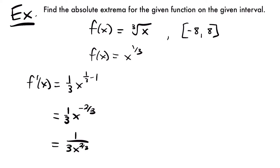Moving this to the denominator to make the exponent positive, we get f prime of x equals 1 divided by 3x to the two-thirds power. If we set this equal to zero, there are no solutions — one divided by anything is never zero, and x equals zero would create an undefined value in the denominator. So there are no critical numbers to check, but we still have the endpoints.